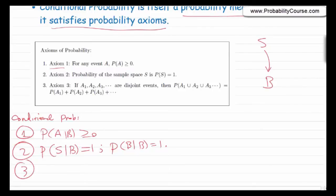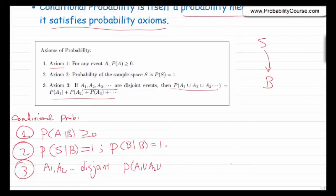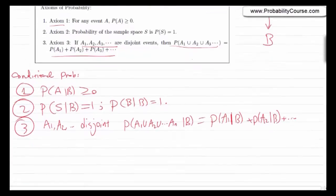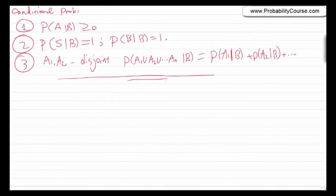Axiom 3: if A1, A2, A3, ... are disjoint events, then P(A1∪A2∪...∪An | B) = P(A1|B) + P(A2|B) + ... So any formula we have for probability can be extended to conditional probability by conditioning on B. For example, P(A^c | B) = 1 − P(A|B), and similarly for inclusion-exclusion: P(A∪B | C) = P(A|C) + P(B|C) − P(A∩B | C).